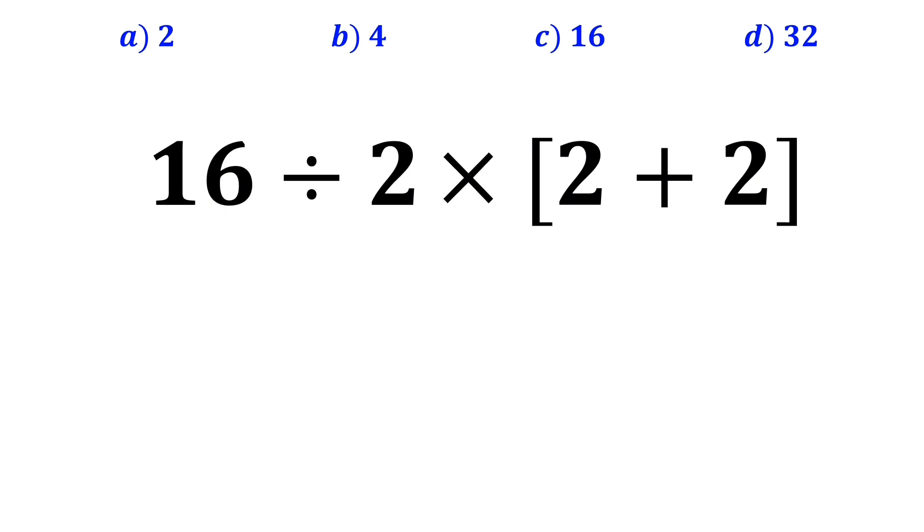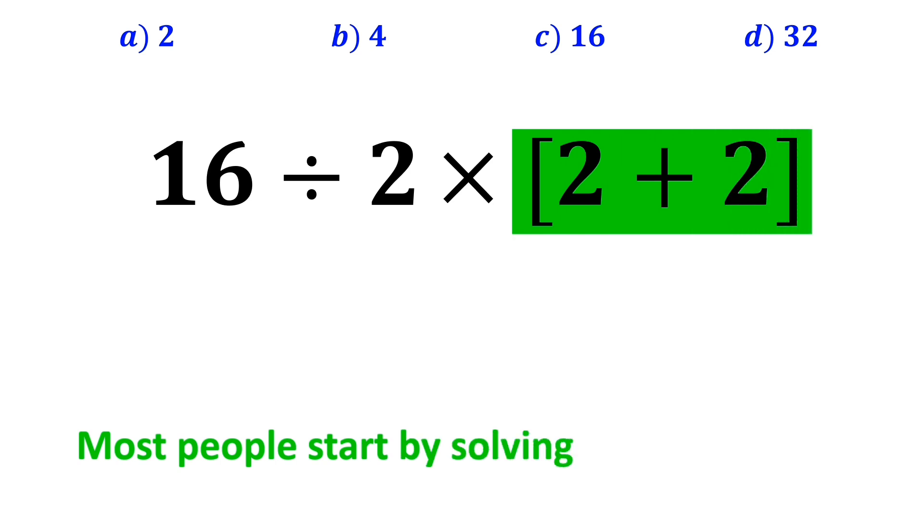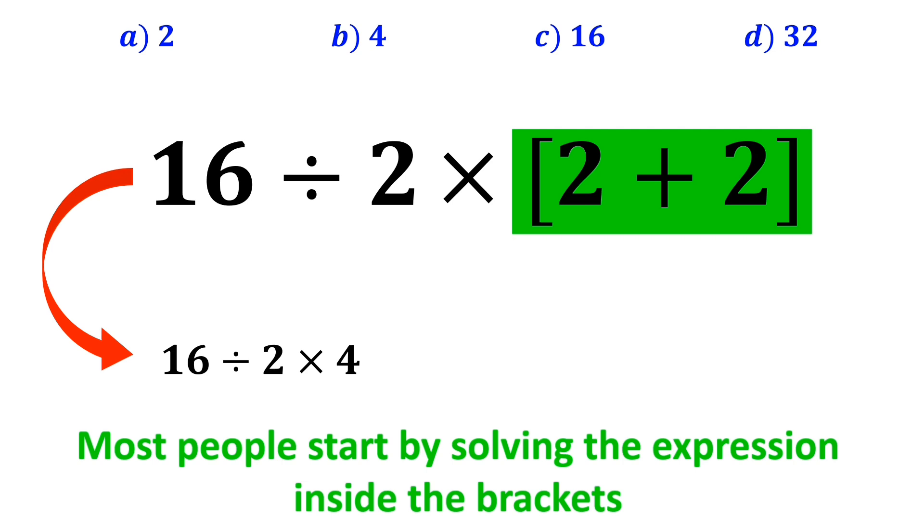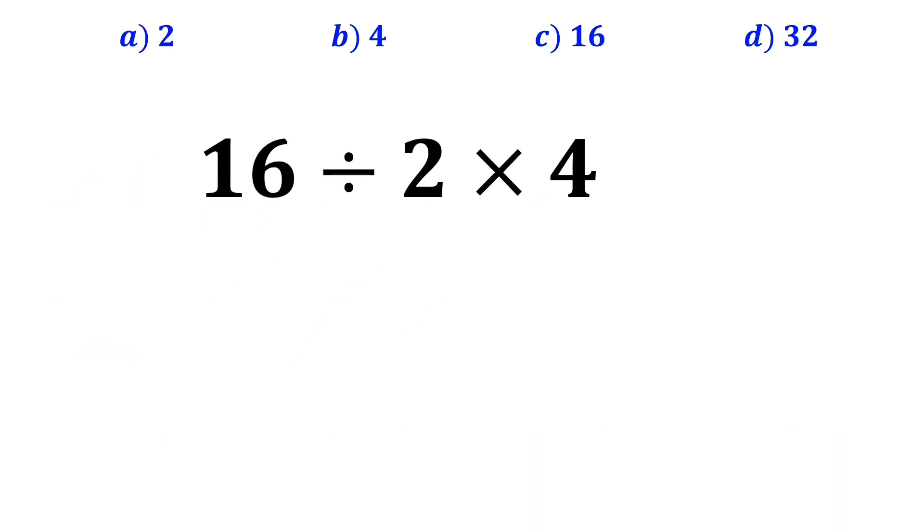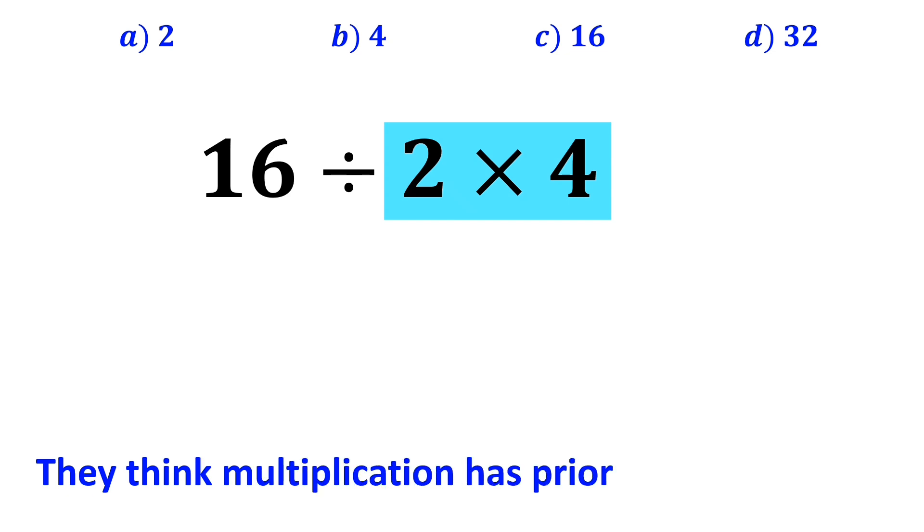Let's take a closer look and solve it together. In the first step, most people start by solving the expression inside the brackets and replace it with 16 divided by 2 times 4. In the next step, they go for the multiplication between 2 and 4, because they think multiplication has priority over division.